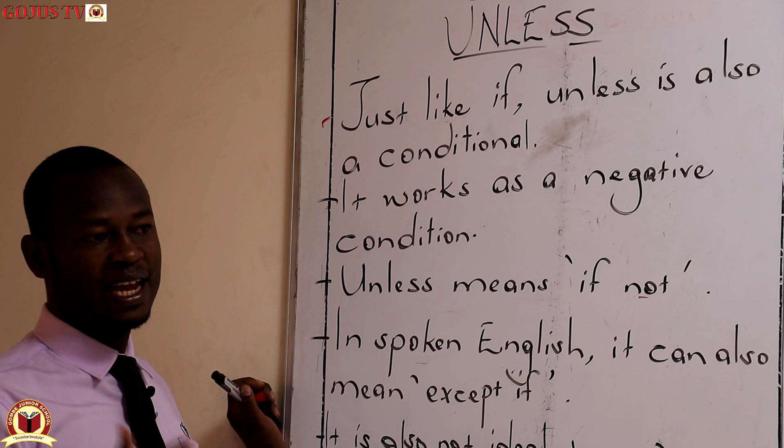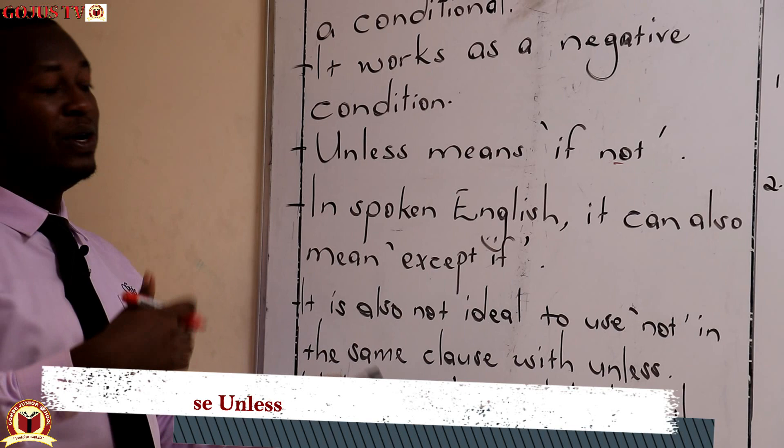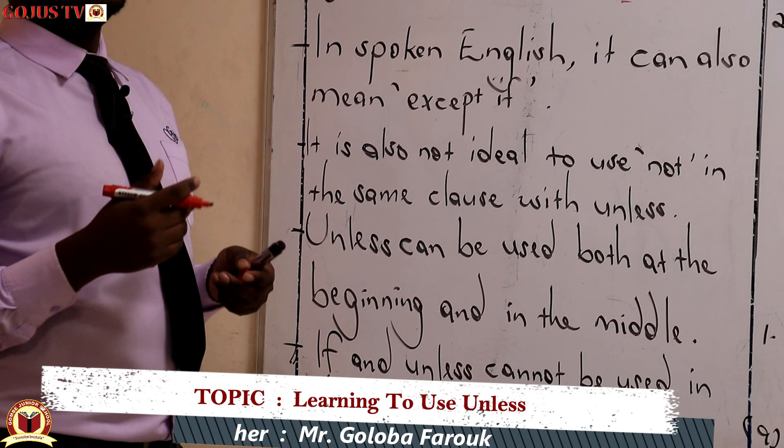So I would say: 'unless I do this, such and such a thing will happen.' You can also say 'except if I do this, such and such a thing will happen.' As part of the points to note, it is not ideal to use 'not' in the same clause with 'unless' — once a clause holds 'unless', you cannot use 'not' in that same clause.